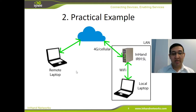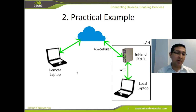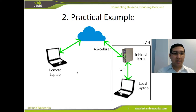The IR915L router is connected via Wi-Fi to the local laptop, and the router is connected to the internet via 4G. On the other side, we have our remote laptop, and this laptop wants to connect to the local laptop via SSH.